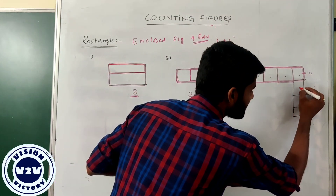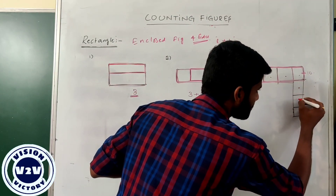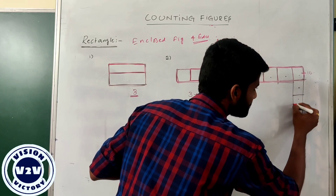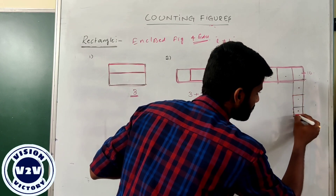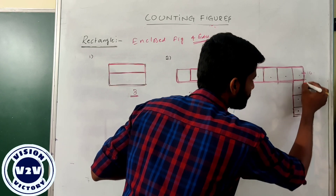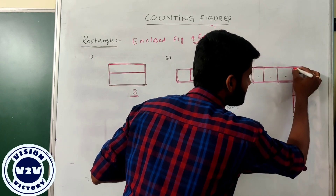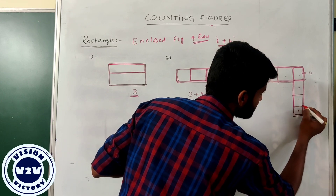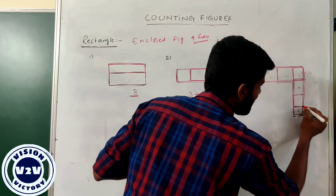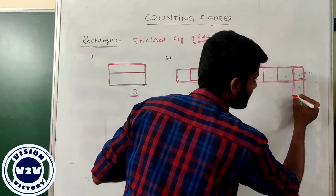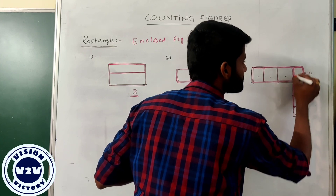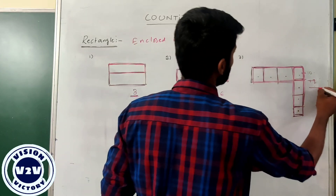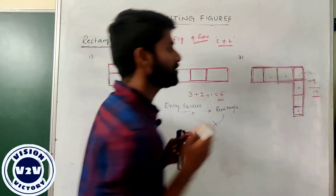For this figure: this is one, this is two, this is three, this is the fourth box, this is the fifth box, this is the sixth box. Starting here: this is the seventh, this is the eighth. And finally, joining these two boxes is also defined as nine. The total number of rectangles in this figure is equal to 19.